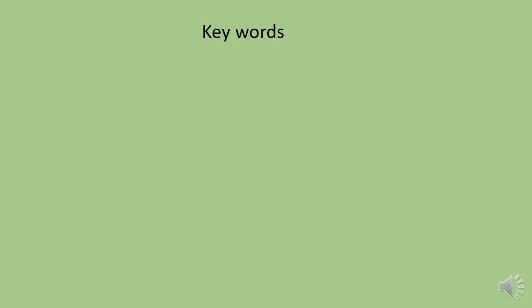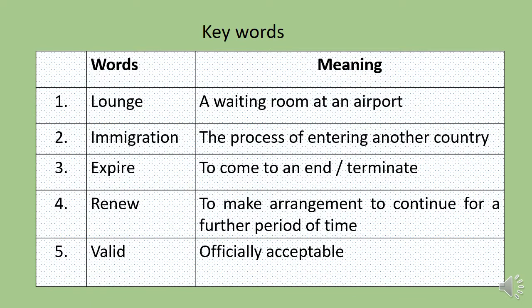Dear students, before starting the lesson, let's take a look at the new vocabulary that you may encounter in this lesson. There are five new words. Number one: lounge — a waiting room at an airport. Number two: immigration — the process of entering another country. Number three: expire — to come to an end or terminate. Number four: renew — to make an arrangement to continue for a further period of time. And number five: valid — officially acceptable.